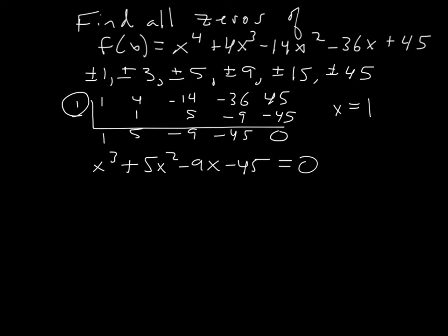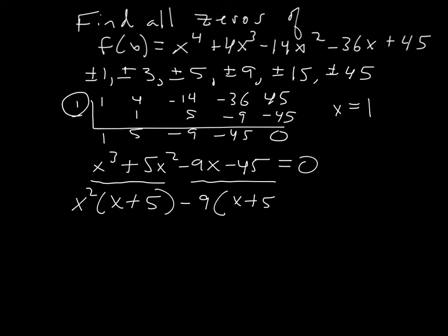You could try more synthetic division — negative one, positive three, negative three — but when you can see the factoring by grouping it's worth just doing it. Looking at the first two terms: x²(x+5), and the last two: −9(x+5). Both pieces have (x+5) in common.